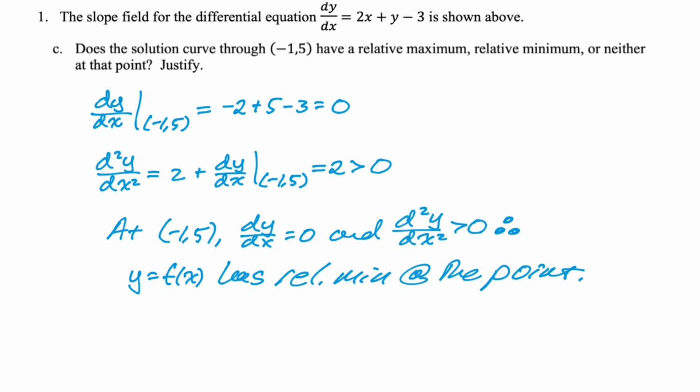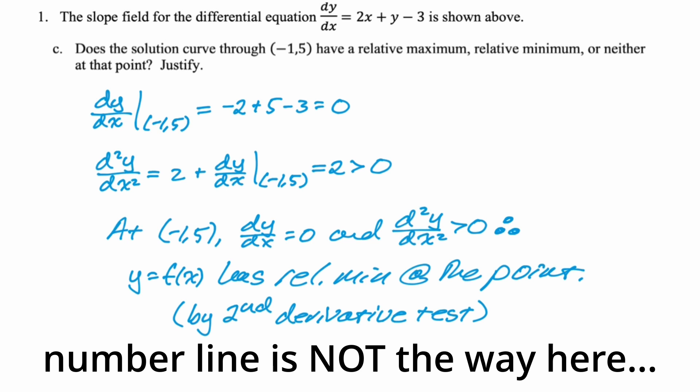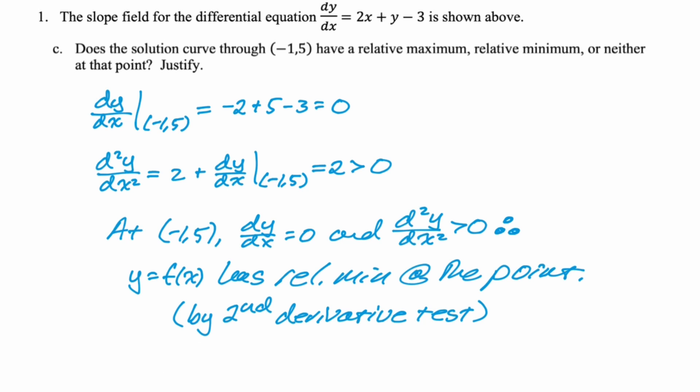So at (-1, 5), dy/dx is 0 and the second derivative is greater than 0, therefore y equals f(x) has a relative minimum at that point. Never try to use a number line test on this — you can't make a number line for something that has both x's and y's. You're talking about parts of the plane, not left or right of a point. Use the second derivative test.